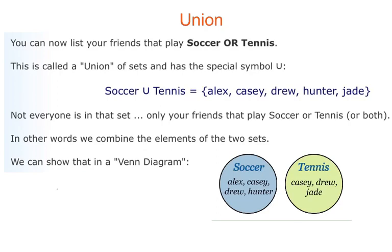You can now list your friends that play soccer or tennis. This is called a union of sets and has the special symbol U. Soccer union tennis gives us: Alex, Casey, Drew, Hunter, and Jade. Notice that not everyone is in that set — only friends that play soccer or tennis or both. If somebody plays cricket or basketball, or doesn't play any sport at all, they are not in this set. We combine the elements of two sets. Also notice: though Casey plays both soccer and tennis, we don't name Casey twice — only once.